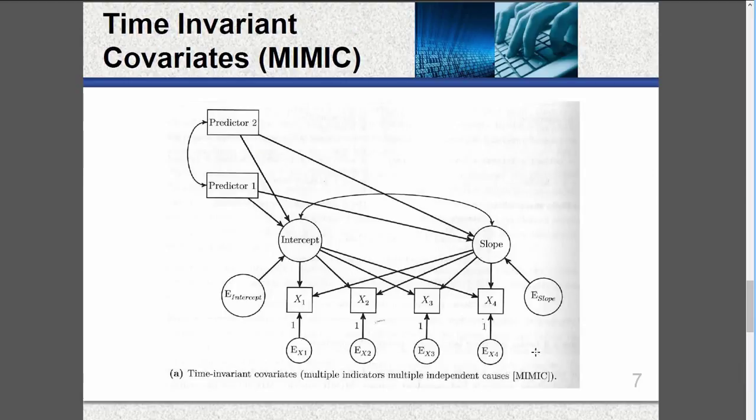Now we're going to add time invariant covariance. We're going to use state, which has two levels, Pennsylvania and New York, and it's categorical.